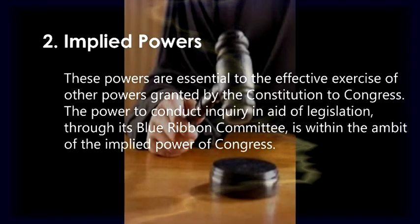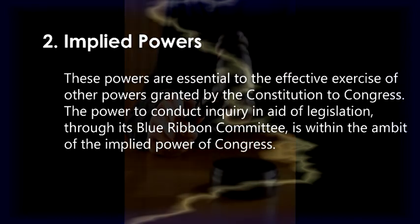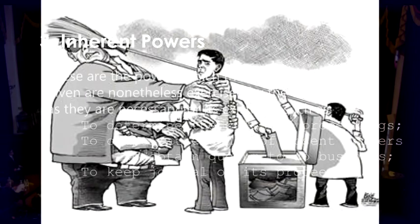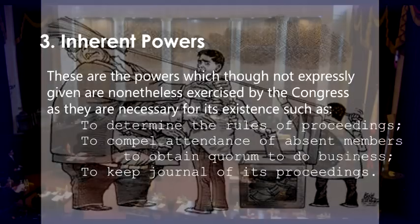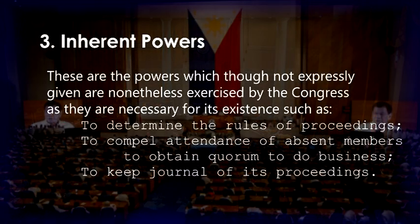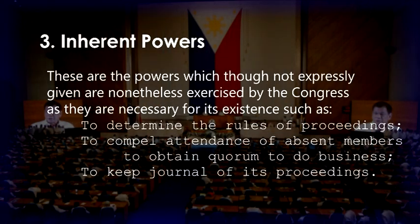Implied powers are those essential to the effective exercise of other powers granted by the Constitution to Congress. The power to conduct inquiry in aid of legislation through its blue ribbon committee is within the ambit of implied power. Inherent powers are those which, though not expressly given, are nonetheless exercised by Congress as necessary for its existence, such as determining rules of proceedings, compelling attendance of absent members to obtain quorum, and keeping a journal of its proceedings.